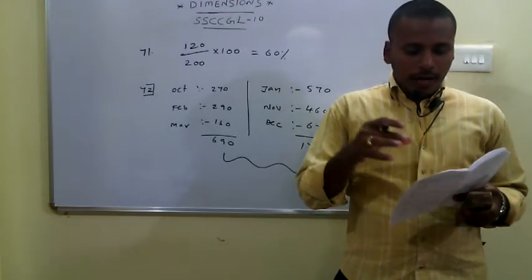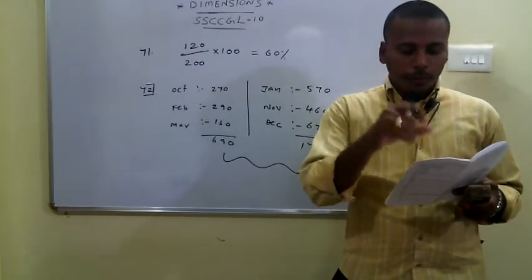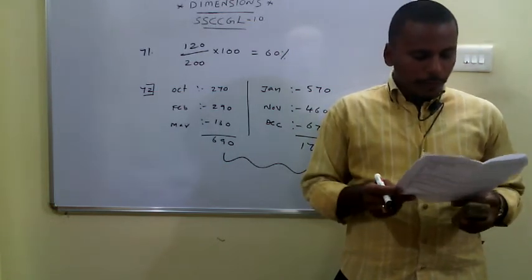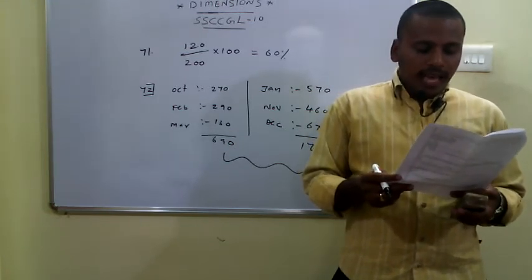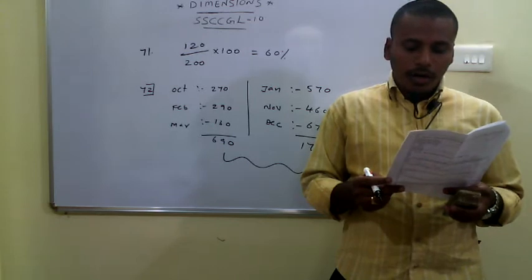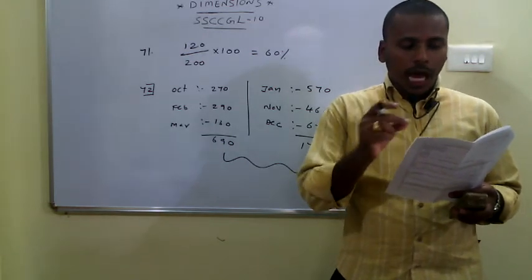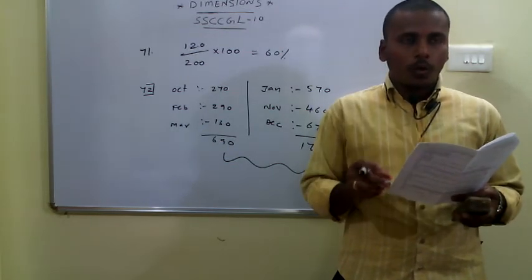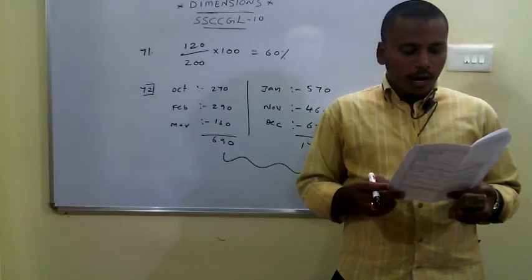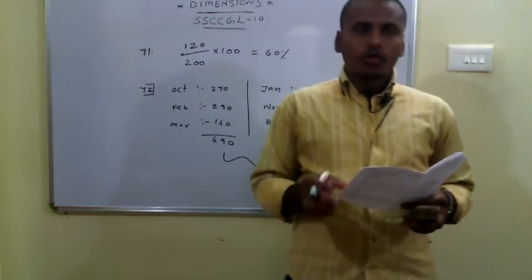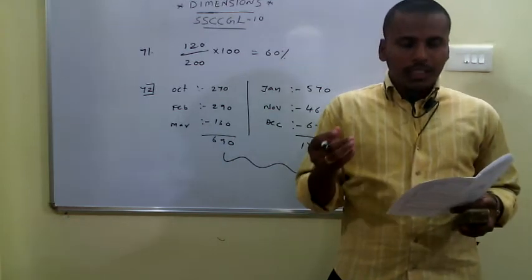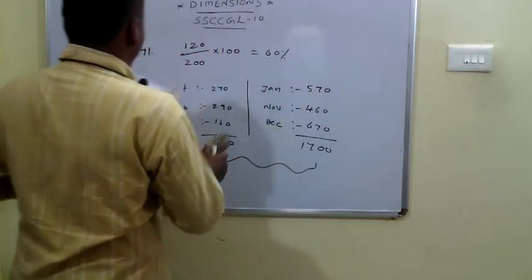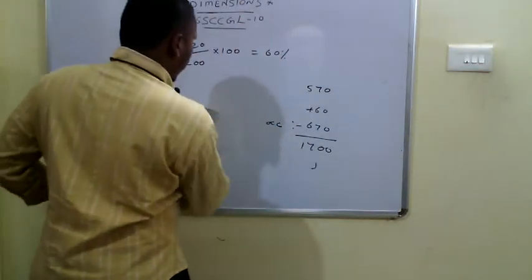The 73rd problem: calculate the total shirts in October, November, December for shop A and shop B separately, then find the percentage increase. The 74th problem: find the average shirts in shop A for October, November, December, February, and March. Adding those values gives 1030; dividing by 5 gives an average of 206.